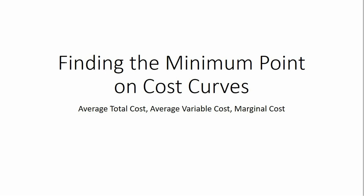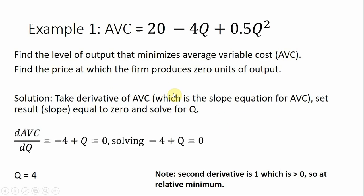Hello. In this video, we're going to look at finding the minimum point on cost curves — the average total cost, average variable cost, and marginal cost. In our first example, we have an average variable cost curve, and what we want to do is find the minimum point on this curve — the point that corresponds to the lowest average variable cost. So we want to find the level of output that minimizes average variable cost, and then later on we'll look into issues dealing with the shutdown point.